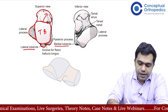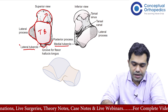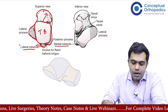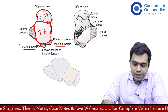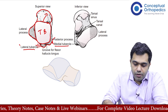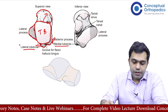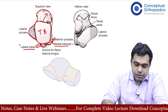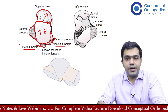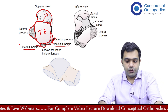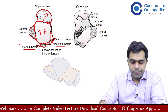It is onto the lateral tubercle that the talofibular ligament is attached, and onto the medial tubercle that the posterior deltoid ligament is attached. There is also a small medial process on the medial side. These are the various parts of the talar body.